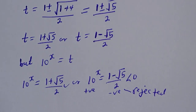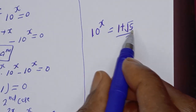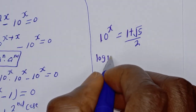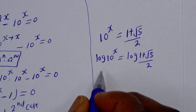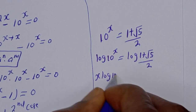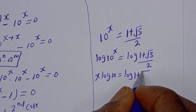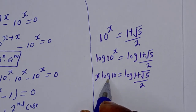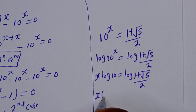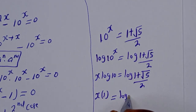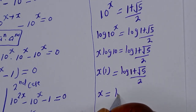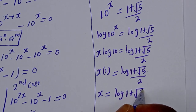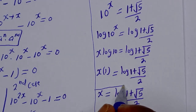Now, let's consider this as the only solution. From 10 raised to power s equals (1 plus root 5) over 2, let's take the log of both sides. So log of 10 raised to power s equals log of (1 plus root 5) over 2. This gives s times log 10 equals log (1 plus root 5) over 2. Since log 10 equals 1, we get s equals log (1 plus root 5) over 2.